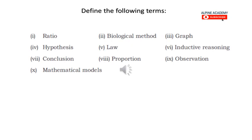Proportion: proportion is the statement that two ratios are equal. Observation: observation is a statement of knowledge gained through the senses, which is qualitative, and through the use of scientific equipment, which is quantitative. Mathematical models: these are equations or formulas that can predict or describe natural occurrences such as organism behavior, population changes over time, protein structure, height of living organisms, population of an endangered species, and bacterial growth.